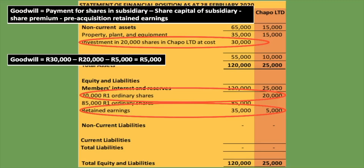From the first lesson, we know that the investment in the shares and the ordinary share capital of the subsidiary cancel each other out. The other item we cancel out is any pre-acquisition retained earnings — as mentioned in the first slide where we discussed what gets cancelled. Everything else will be added together.